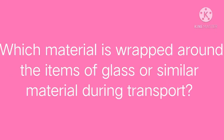Can you tell which material is wrapped around items of glass or similar material during transport to prevent them from breaking? The plastic bubble wrap or thermacole is used to protect fragile items from shocks and breaks during their transport.